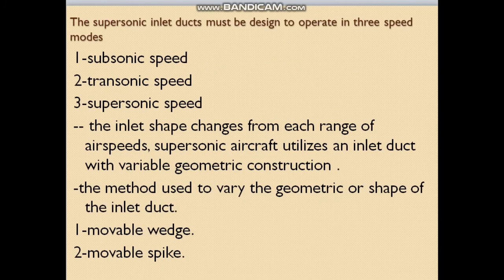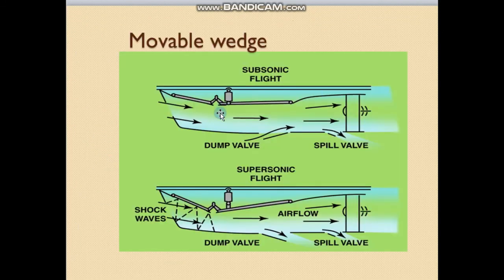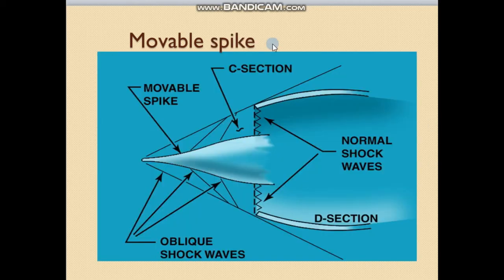The supersonic inlet duct must be designed to operate in three speed modes: subsonic speed, transonic speed, and supersonic speed. The inlet shape changes for each range of air speeds. Supersonic aircraft use an inlet duct with variable geometric construction. The methods used to vary the geometry or shape of the inlet duct are the movable wedge and the movable spike. As we see here, this is the movable wedge at subsonic flight and this is the movable wedge at supersonic flight. Here is the second method — the movable spike — and here the air enters the turbine engine.